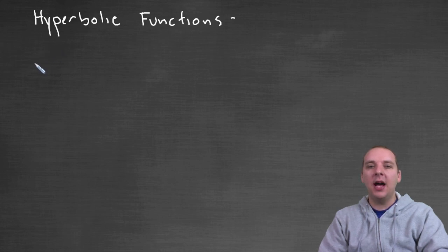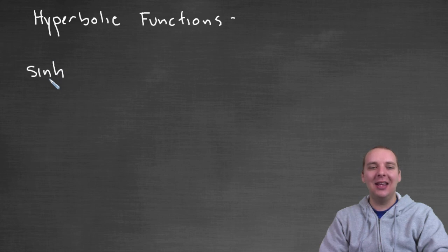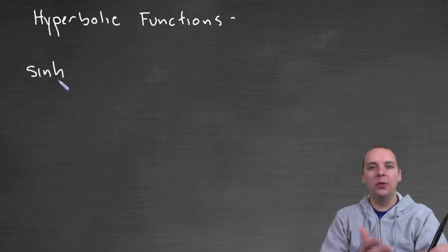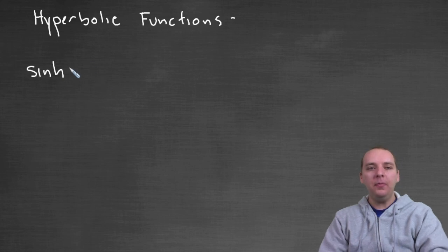If we take for instance hyperbolic sine of x, we'll focus primarily on that one in this video. Then the way we write that is we write S-I-N-H, S-I-N-H. That's the little expression that means hyperbolic sine. And yes I know we put the H at the end, but we say hyperbolic first, that's just kind of the way we do it, of x. So this is still a function of x.